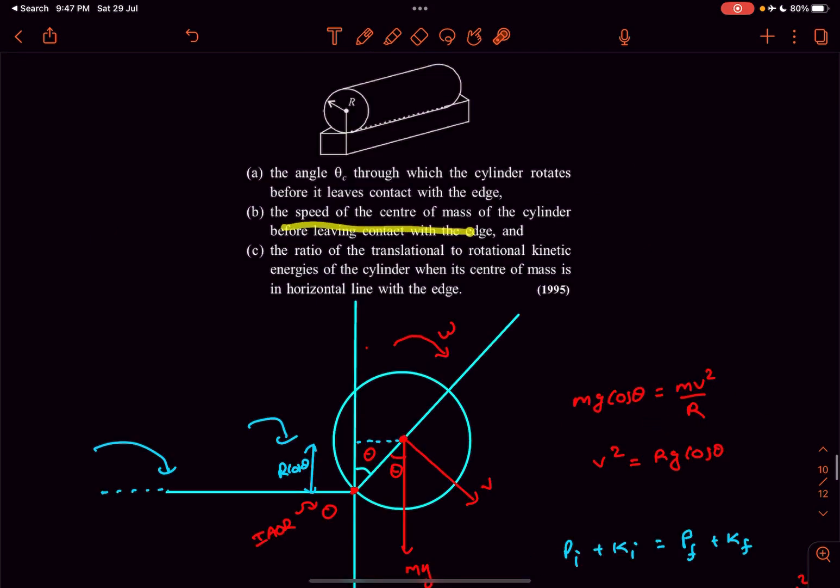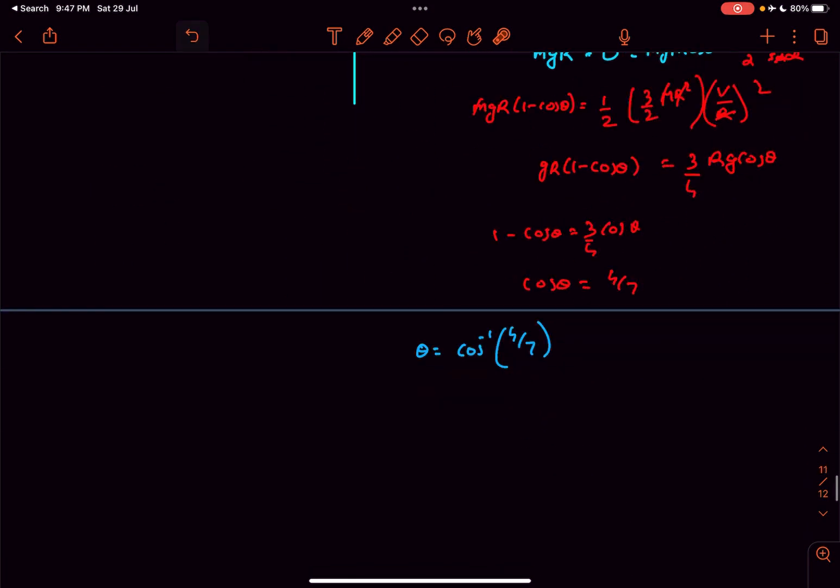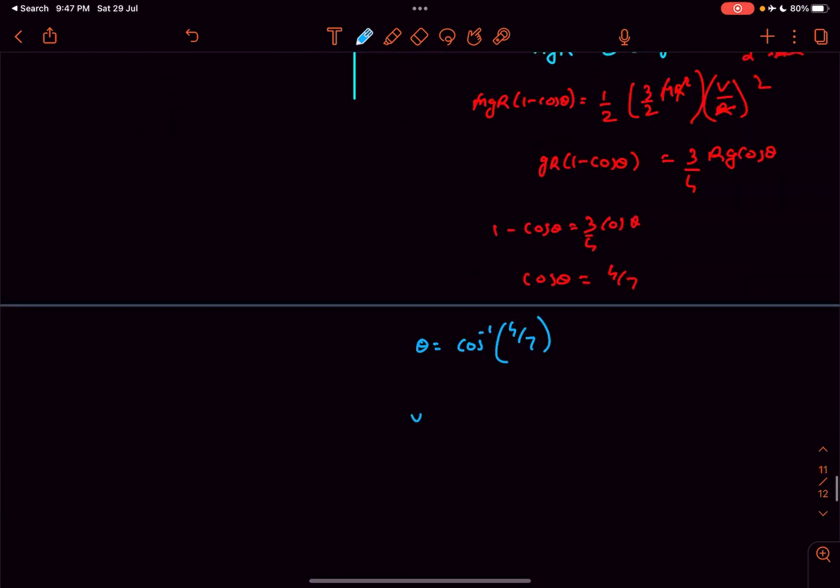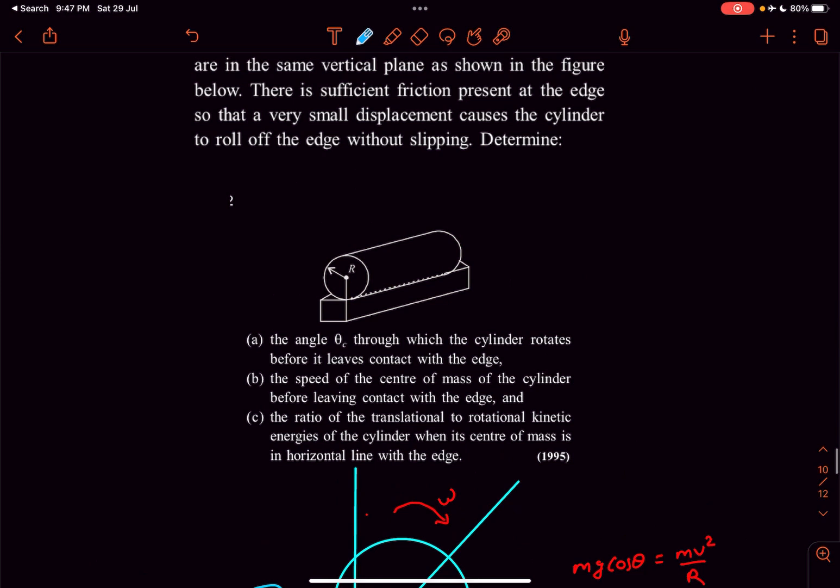Now we have to determine the speed of the center of mass. We can easily determine now because we determined the relation between v and theta. So v squared is simply rg cos theta which is 4 by 7. So the speed of the center of mass is simply square root of 4 rg divided by 7 and that is the answer for the second question.